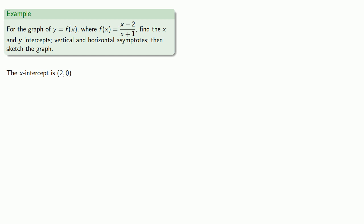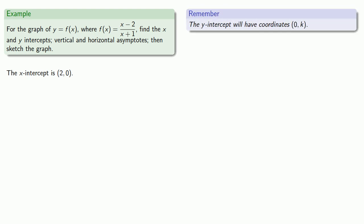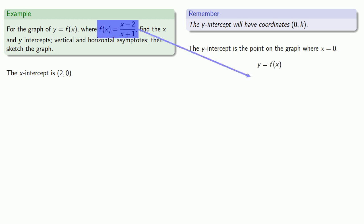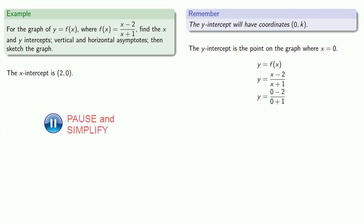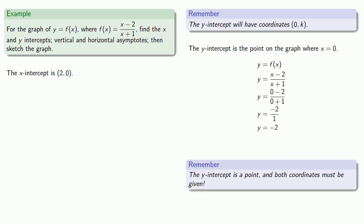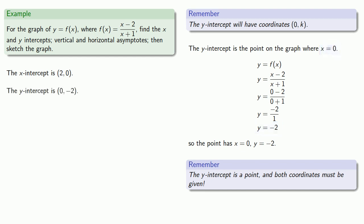We can also find the y-intercept. The y-intercept will have coordinates (0, k), and so the y-intercept is the point on the graph where x is equal to 0. So we're graphing y equals f of x, where f of x is x minus 2 over x plus 1. We replace x with 0 and do a little arithmetic to find our y-value. Remember, the y-intercept is a point, so both coordinates must be given. We have x equals 0, y equals negative 2, and the y-intercept is at (0, negative 2).